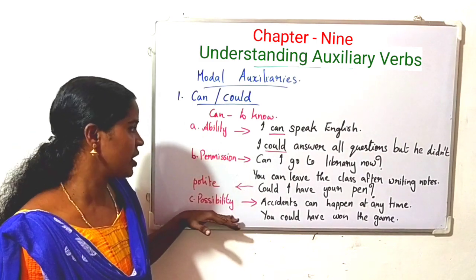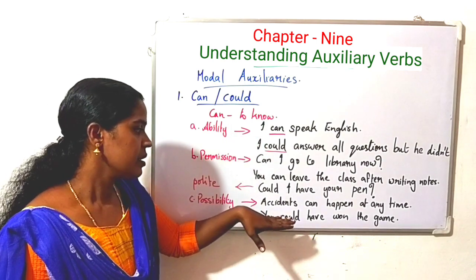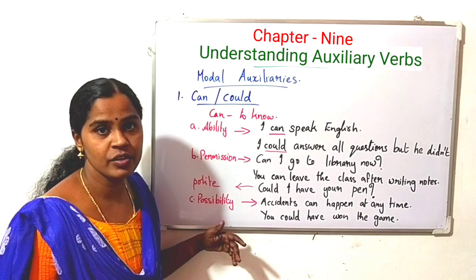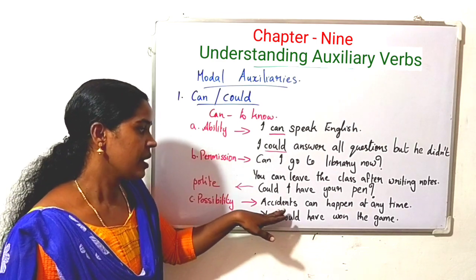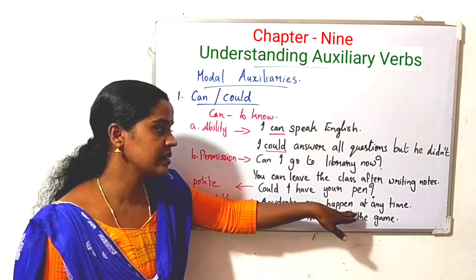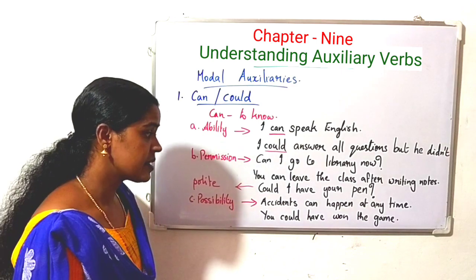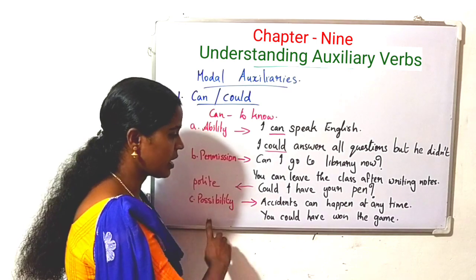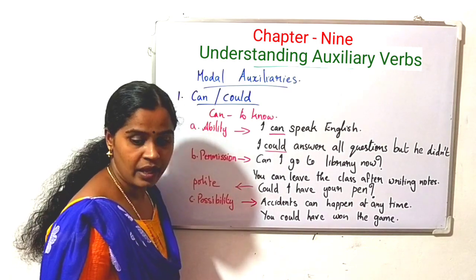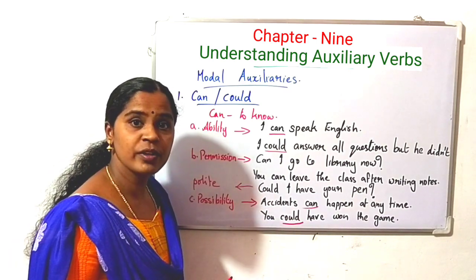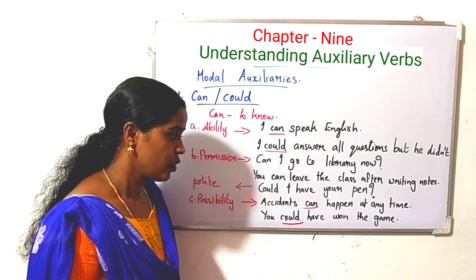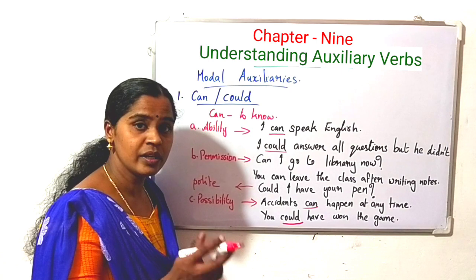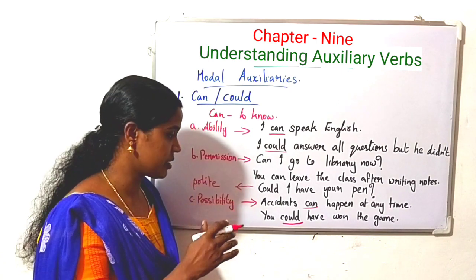The third mood expressed by can is possibility — it can suggest the possibility of an action. For example: 'Accidents can happen at any time' — here 'can happen' expresses the possibility of an action. Could expresses the possibility of something in the past. For example: 'You could have won the game' — that is past possibility.